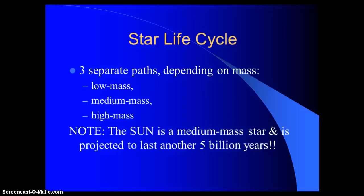Get your packet out, and you should have Star Life Cycle three separate paths depending on mass. Mass is going to be the determining factor for which direction, which path a star takes. So we have low mass, medium, and high mass options. And the Sun is a medium mass star and is projected to be stable for another 5 billion years.